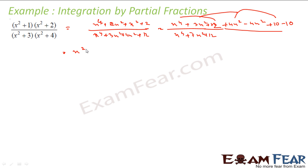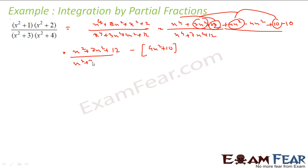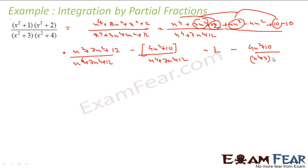Combining these terms: x⁴ + 3x² + 4x² = 7x², and 2 + 10 = 12, minus 4x² + 10. So the expression becomes 1 minus (4x² + 10)/(x⁴ + 7x² + 12), which is 1 minus (4x² + 10)/((x² + 3)(x² + 4)). Integration of 1 is very simple, so I focus on the remaining fraction.